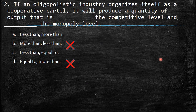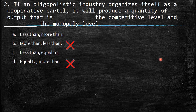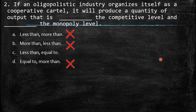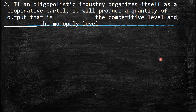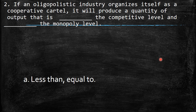Option 'equal to competitive level' is never possible — they organize to reduce the maximum quantity and improve profit. 'More than monopoly level' is also wrong because they organize as one. So the most accurate answer should be: less than the competitive level and equal to the monopoly level.